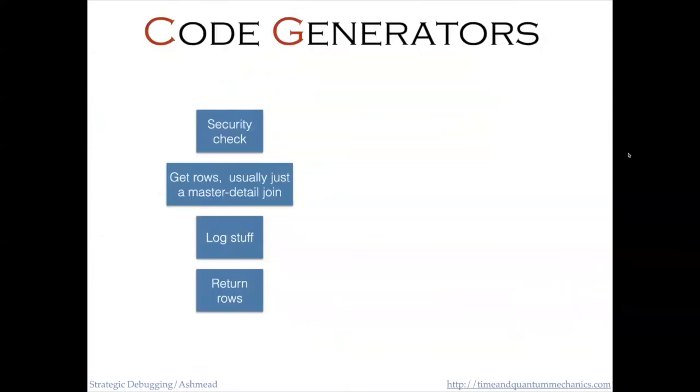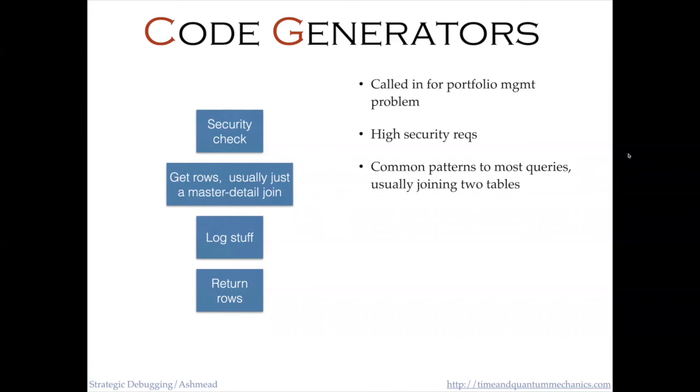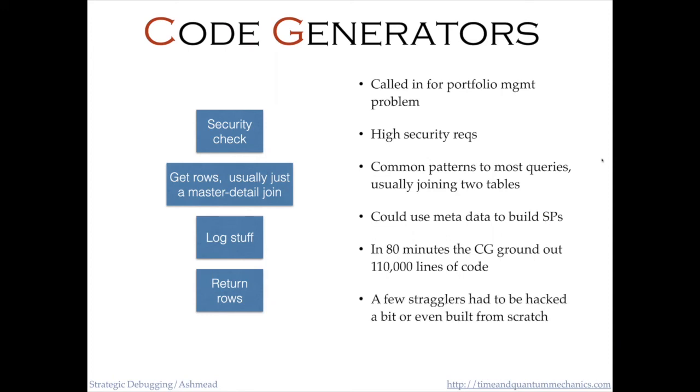One of my biggest single successes with this was at a portfolio management company where I was called in to write some tools to help their clients review their portfolios. These had high security requirements. Their clients all had $5 million or more portfolios. So they really cared about who could see what. But I noticed that the specifications fell into a very common pattern, usually master detail joins. So I could go into PG catalog, pull out the data needed to build the stored procedures. And most of the time, 80% of the time, the code generator built the right code. Most of the rest of the time, it got close enough that I could just write a couple of little squiggles of additional code. And there were a few bits of code where honest work had to be done. In 80 minutes, the code generator had done 100,000 lines of code, and a couple of more days and I'd finished the project.